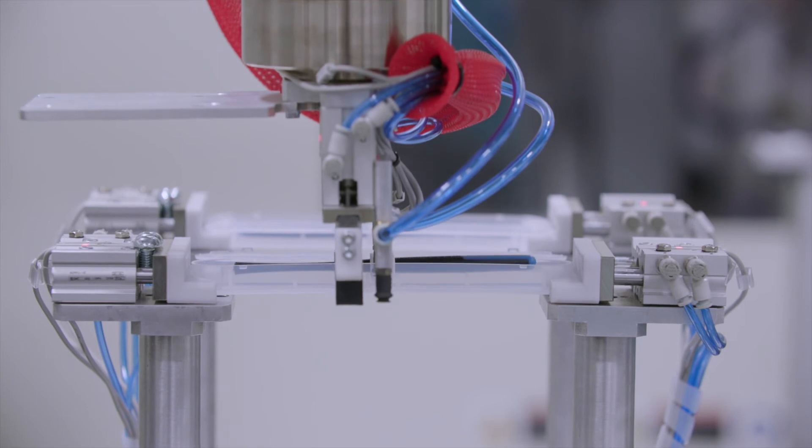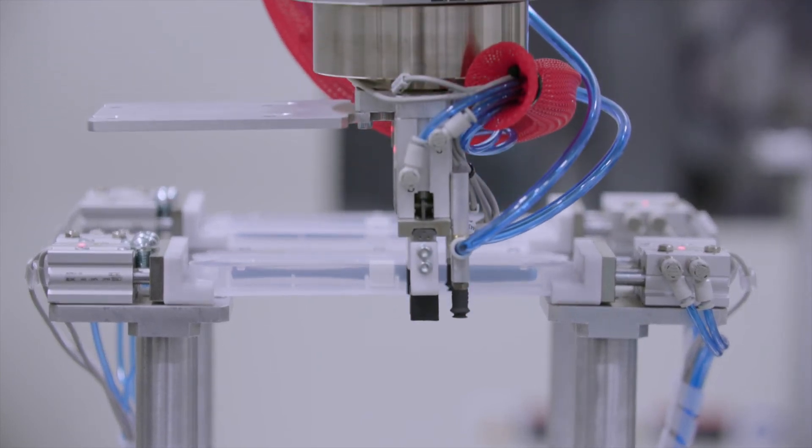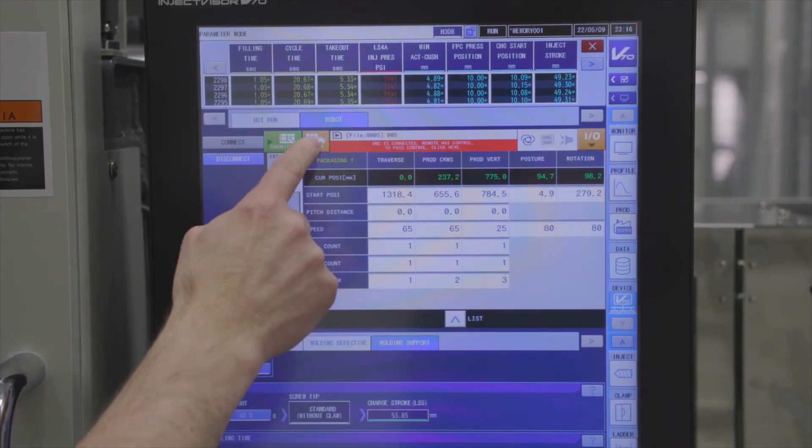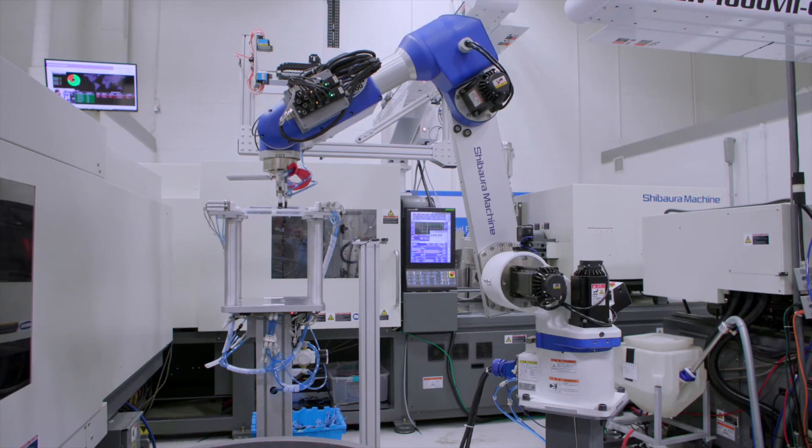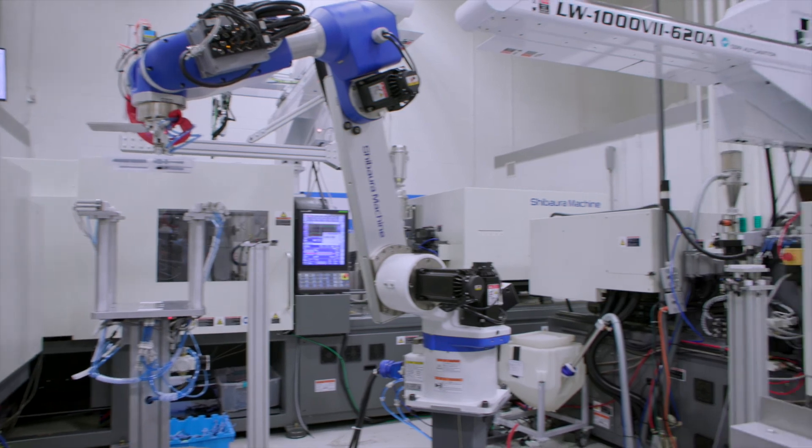MachineAct Cloud and MemoryLink bring a new level of production insight and rapid part changes. MemoryLink allows a single preset change on the V70 to simultaneously configure the second injector and robot for seamless production changes, reducing the risk of costly errors.